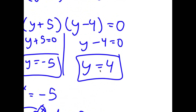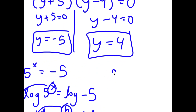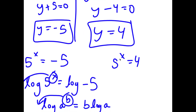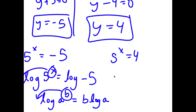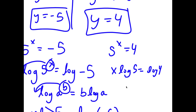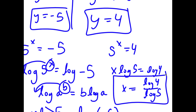Now with y equals 4, I have 5 to the power of x equals 4. Taking the log on both sides, I get x times log 5 is equal to log 4, meaning x is equal to log 4 over log 5. So this is my answer.